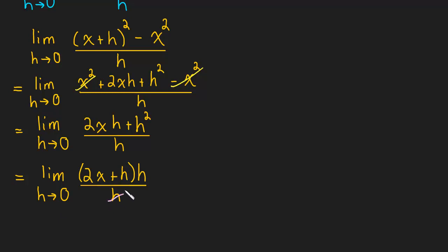And now these h's can divide out. And we're just left with the limit as h approaches 0 of 2x plus h. And now we can take this 0, plug it in for h, and we're pretty much done.